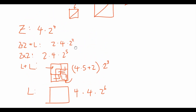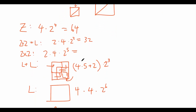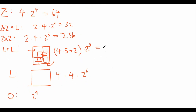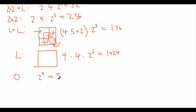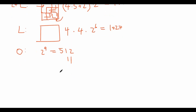Let's add everything up. The Z-tile case: 4 × 2⁴ = 64. The 2×2 plus L-tile case: 2 × 4 × 2² = 32. The 2×2 alone: 8 × 2⁵ = 256. Two L-tiles: 22 × 2³ = 176. One L-tile: 4 × 4 × 2⁶ = 1024. No special tiles: 2⁹ = 512. Adding all these up, the final answer is 2064.